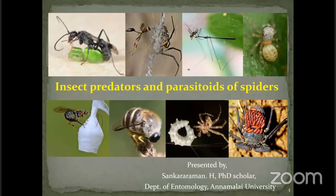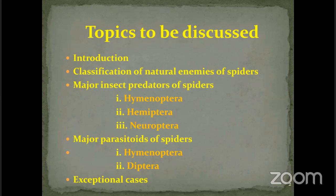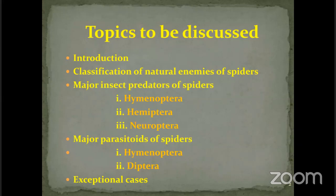My topic is on insect predators. The webinar covers insect predators and parasitoids of spiders, including: an introduction on spider diversity in the world and in India; classification of natural enemies including predators and parasitoids; major predators under order Hymenoptera — which includes bees, wasps — and other parasitoid groups, Hemiptera, and Neuroptera, which are completely predatory.